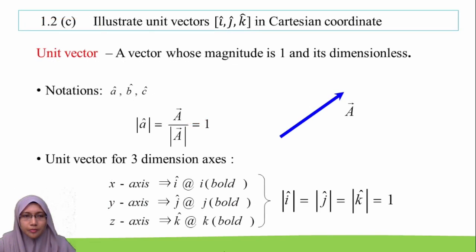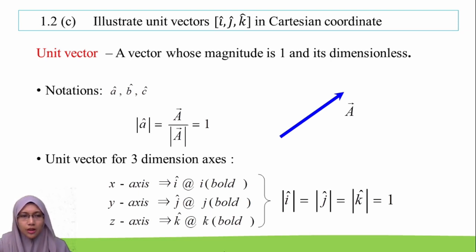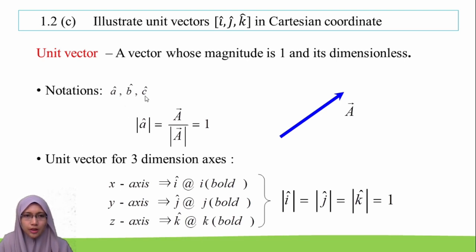The next learning outcome for 1.2 is to illustrate the unit vectors I, J, and K in Cartesian coordinates. The unit vector means a vector whose magnitude is 1 and it is dimensionless. The notation of a unit vector is a-hat, b-hat, and c-hat. For a vector, it actually consists of a few unit vectors.